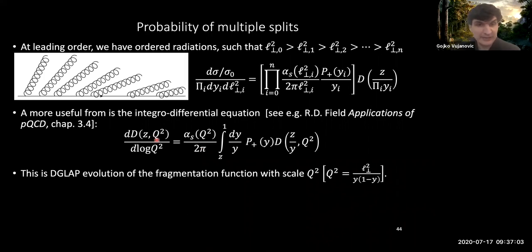Sorry, divided as a function of log q squared. That this is essentially telling you, as a function of energy, how does the fragmentation function vary. And this is essentially known as the D-glap evolution.